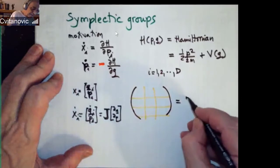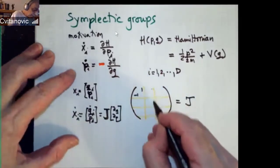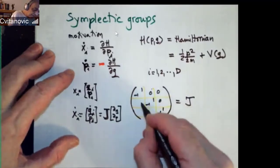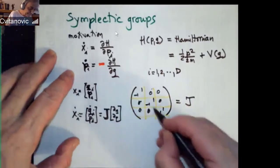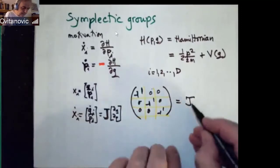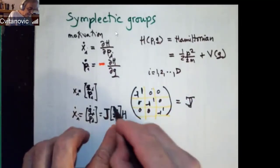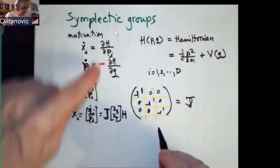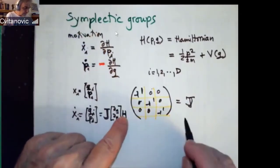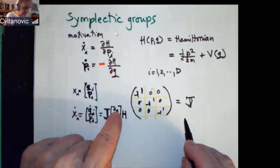So this matrix has form one minus one, one minus one, one minus one, and then zero is every place else. Because if you multiply this combination of derivatives of the Hamiltonian, they will take care of derivatives back to Q showing up here with a minus sign and derivatives back to P showing up here.